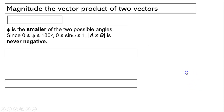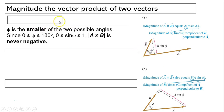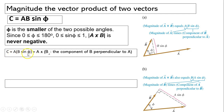Now let's look at the magnitude of the vector product. The magnitude of a cross b is a times b times sine phi — that is, the magnitude of a times the magnitude of b times the sine of the angle between them. In this equation, phi is the smaller of the two possible angles, so phi is between 0 and 180 degrees, which means sine phi is always positive. So the magnitude of the cross product can never be negative, unlike the scalar product. We can rearrange this as a times b sine phi, where b sine phi is the component of b perpendicular to a. This is an important concept we'll use later when we talk about torque.